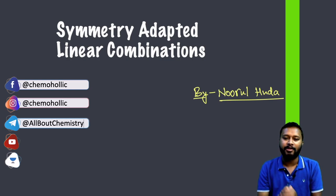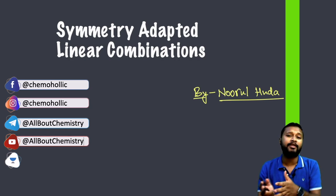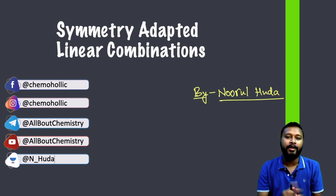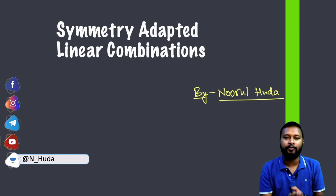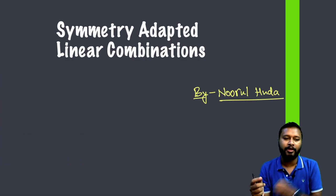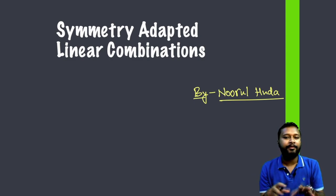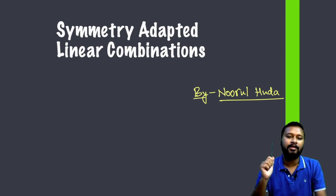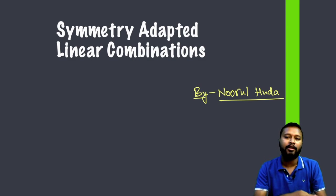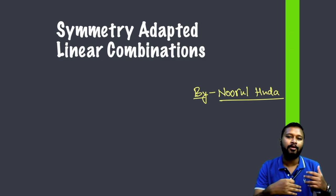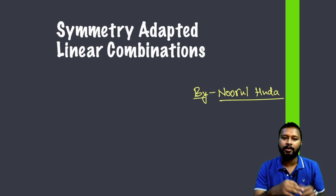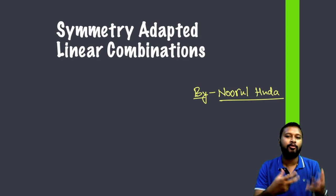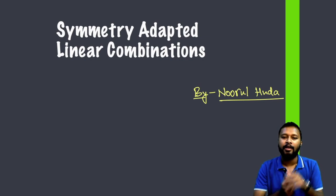This video is going to be about symmetry adapted linear combinations. This topic is basically from your advanced group theory. You will only understand this concept if you know the basics of group theory — how to find a point group, how to use a character table, and all. If you don't know about those things, I'll attach a link for the playlist of group theory where I have included all the basic videos.